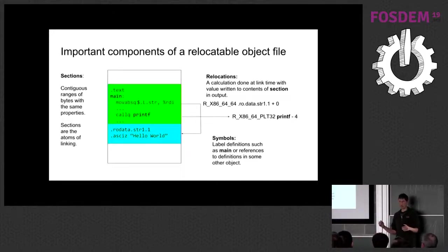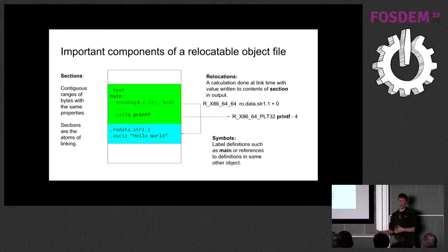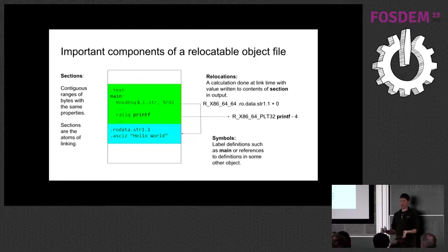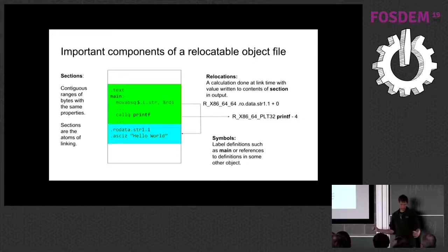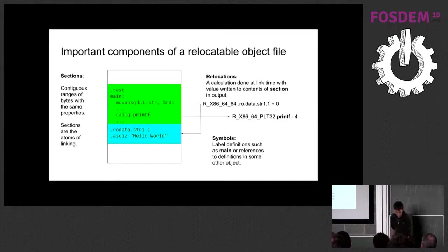Relocations are points where the linker is instructed to fix up a reference. The relocation tells the linker precisely what calculation it needs to do, and that precision enables the linker not to understand any of the contents. Symbols are kind of like labels — something like 'main', the function name, will get put out as a symbol. Symbols are defined in sections — main might be offset zero in the .text section — and relocations refer to symbols. It's all a three-way relationship.